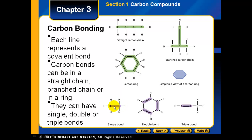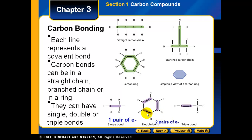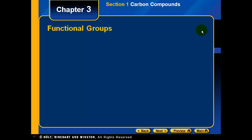Carbon can form single bonds, double bonds, and triple bonds. For a single bond, there is one pair of electrons being shared between two carbons. For a double bond, there are two pairs of electrons being shared. In a triple bond, there are three pairs of electrons being shared.